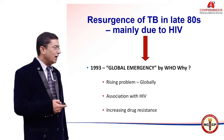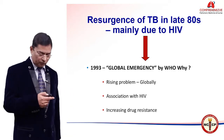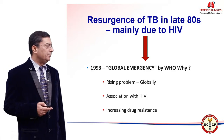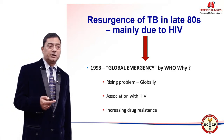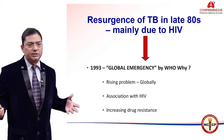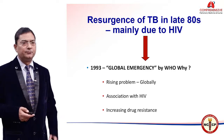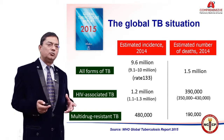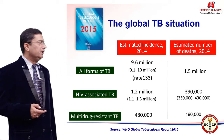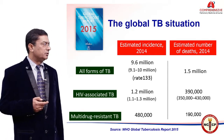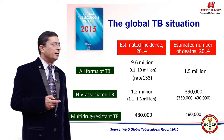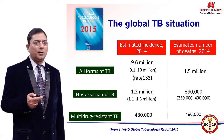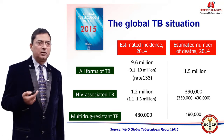Tuberculosis was declared a global emergency for three reasons: the rising global problem associated with HIV, and the increasing problem of drug resistance. And still in 2016, we are facing the problem of increasing drug resistance. If you look at the global burden, there were roughly 9.6 million cases of tuberculosis in 2014, and roughly 15 lakh out of this population died because of tuberculosis.